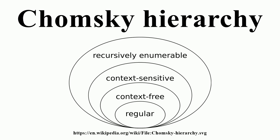The hierarchy. The Chomsky hierarchy consists of the following levels. Type 0 grammars include all formal grammars. They generate exactly all languages that can be recognized by a Turing machine. These languages are also known as the recursively enumerable languages. Note that this is different from the recursive languages, which can be decided by an always-halting Turing machine.